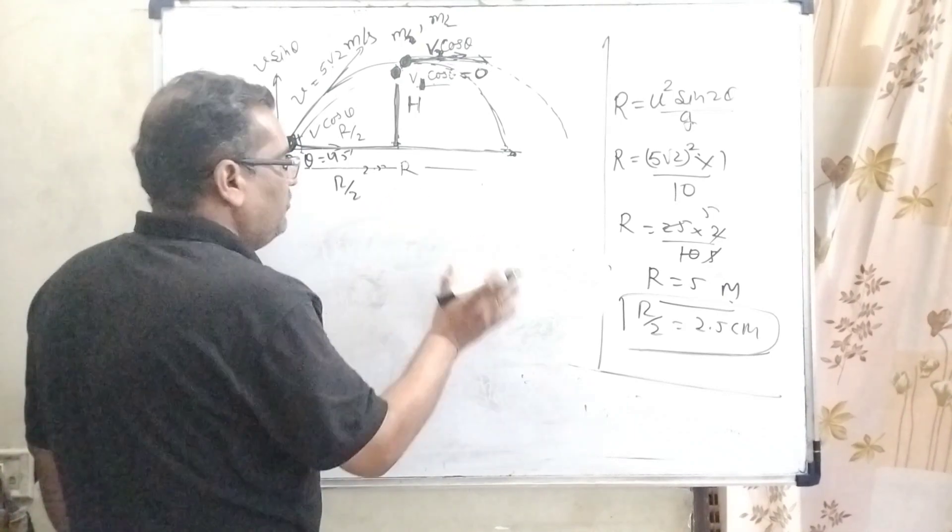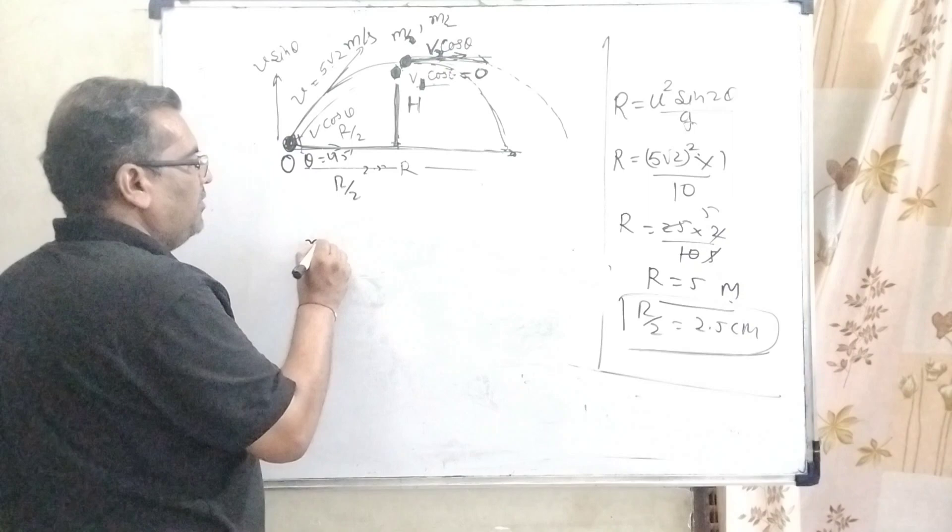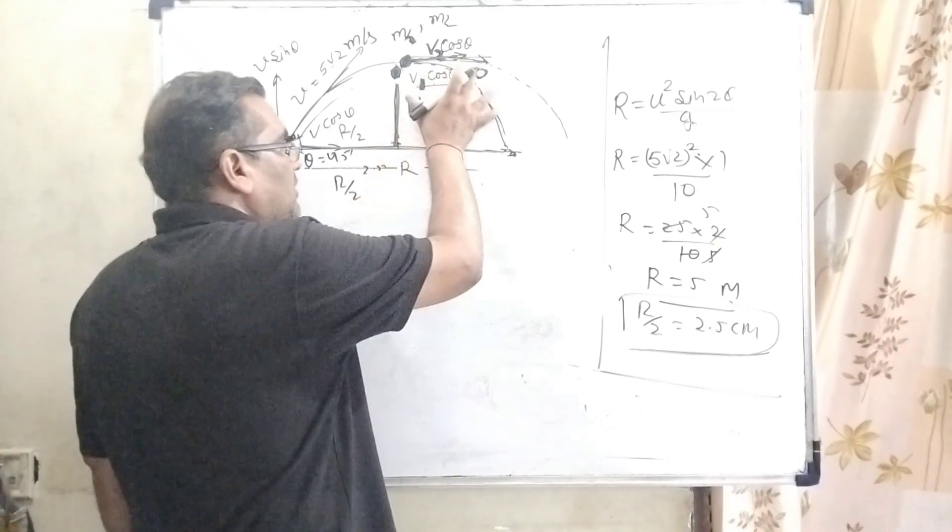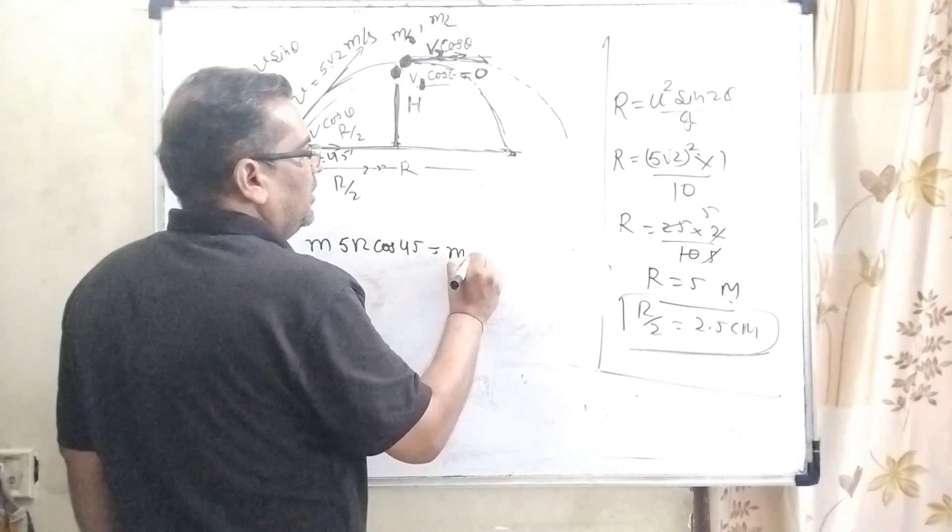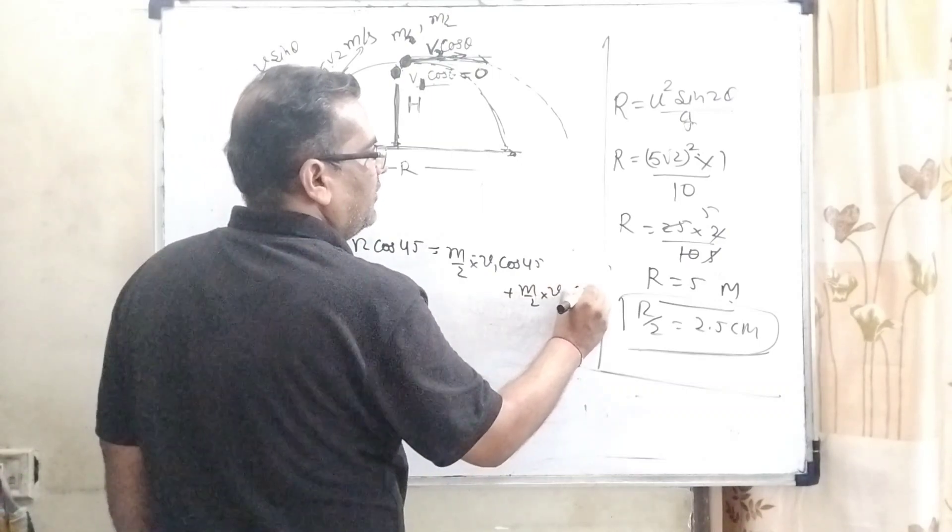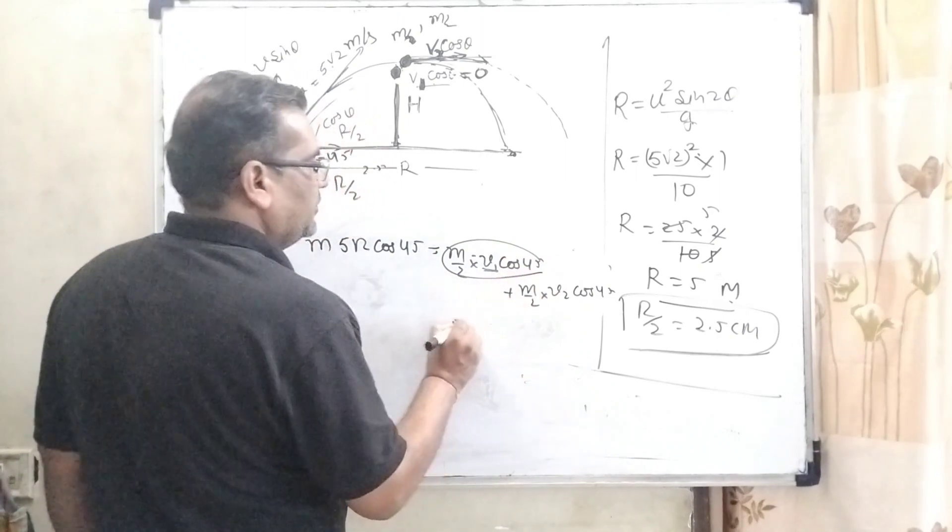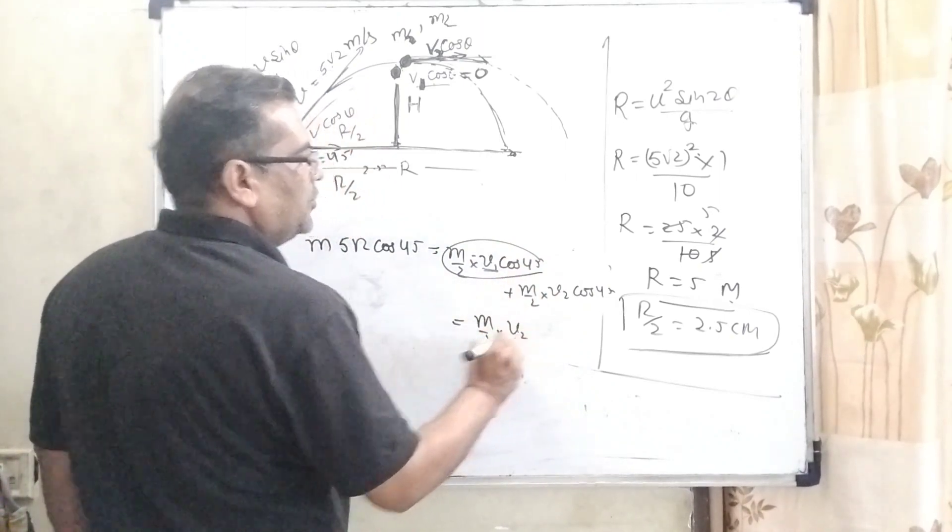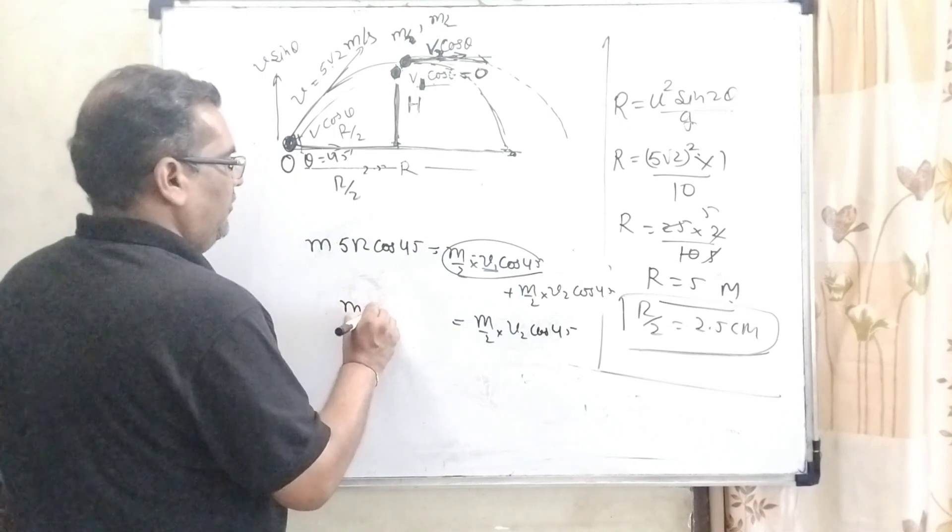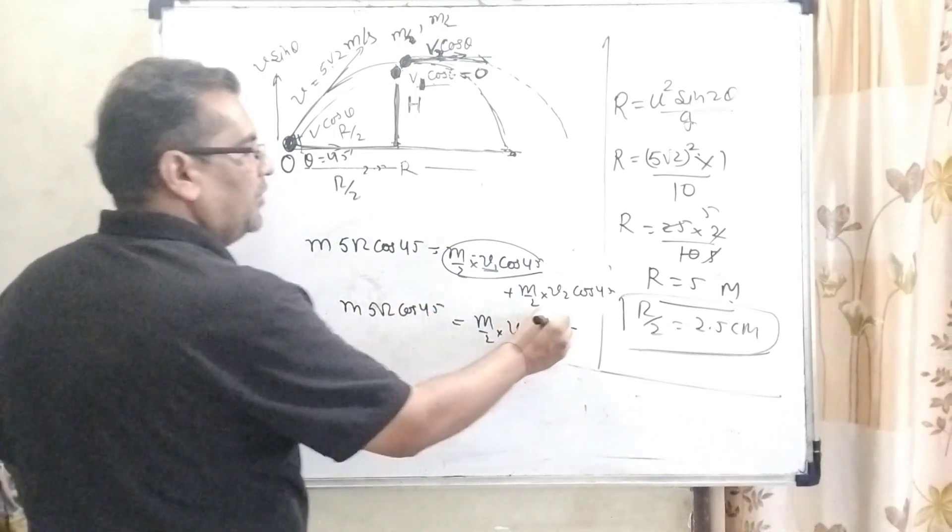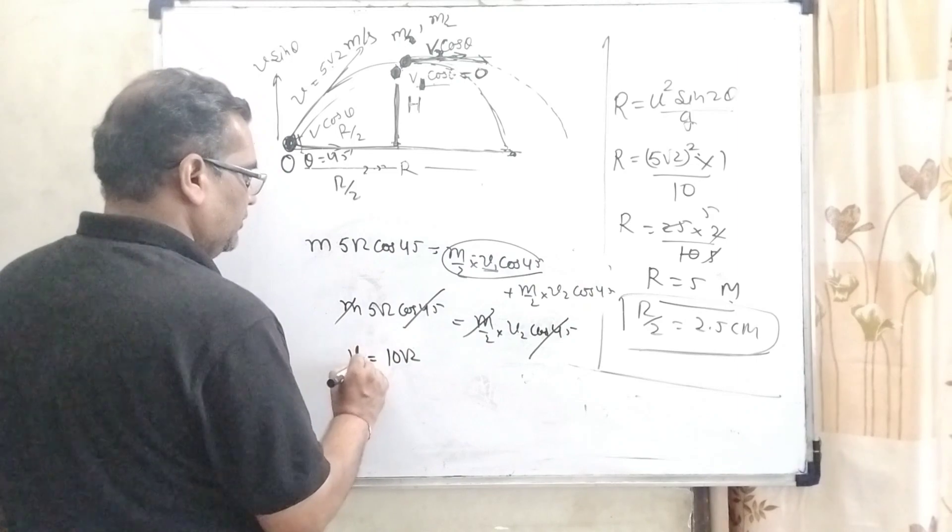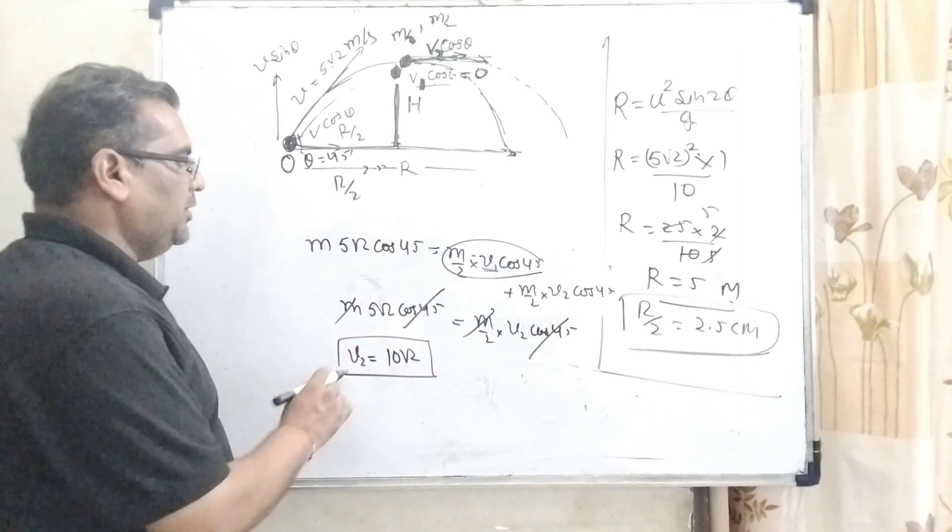So applying law of conservation of momentum. Before splitting, the mass is m with velocity 5√2 cos 45. After splitting into two parts: m/2 × V1 cos 45 + m/2 × V2 cos 45. Here this velocity V1 is 0, so the whole value becomes 0. Here m/2, V2 and cos 45 remain. Canceling out m, we get 2 × 5√2 = V2. So here we get velocity V2 = 10√2.